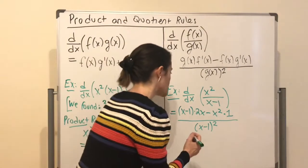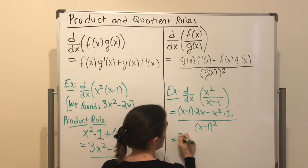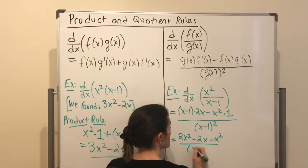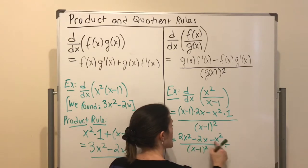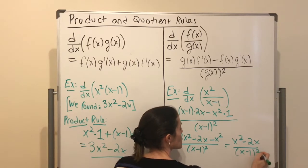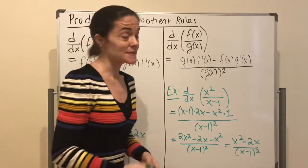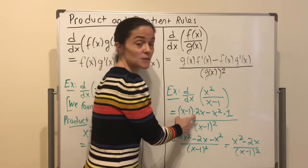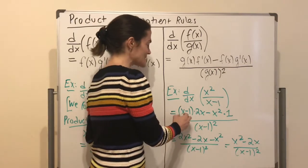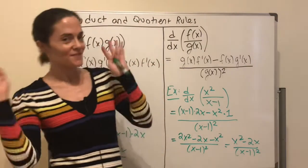Let's simplify our first example. We get 2x squared minus 2x minus x squared over (x minus 1) squared. Simplifying one more step: x squared minus 2x over (x minus 1) squared — this is about as simple as we can make it. Note that the (x minus 1) in the numerator cannot cancel with one of the (x minus 1) factors in the denominator, because it's only multiplied by the first term; you can't cancel across a fraction like that.